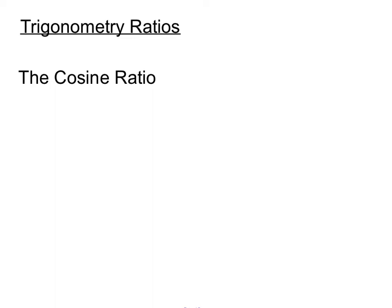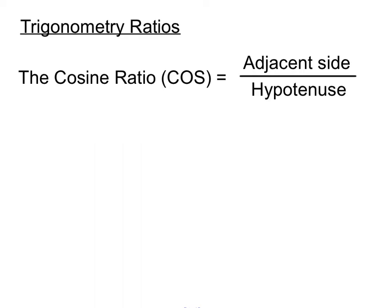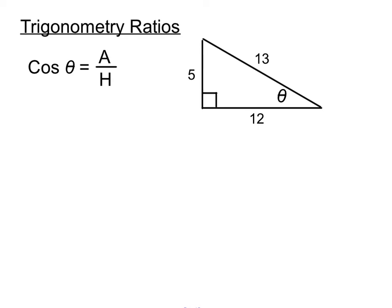The next trigonometry ratio is cosine, which we call cos. It involves a ratio of the adjacent side over the hypotenuse, so cos Theta equals adjacent over hypotenuse, A over H. In the same triangle, naming the sides again: the hypotenuse is the longest side, 5 is in the opposite position, and 12 is in the adjacent position. So the cosine ratio for Theta is 12 over 13.